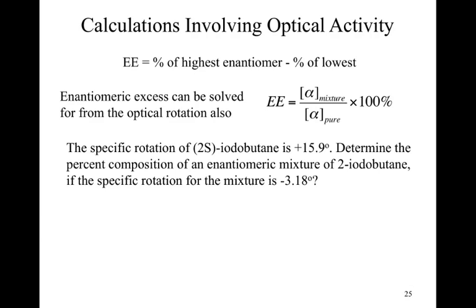Where this comes into play is that you will typically be given a question like that shown below. We have the specific rotation, and here I'm telling you the name of the compound, 2S-iodobutane, and you're told that it has a positive 15.9 degrees specific rotation. That's the literature. If we now take a mixture that is some combination of the enantiomers of this compound, I notice that the specific rotation for that mixture happens to be -3.18 degrees. So we now want to know the percent composition. So how much of the S, how much of the R is present in this?